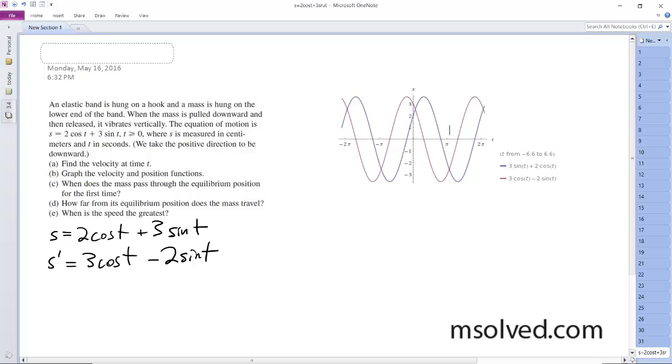All right, so then we want to find where we have equilibrium, where the derivative, where there's no speed. So the derivative is going to be equal to 0. So set this equal to 0: 3 cosine t minus 2 sine t.